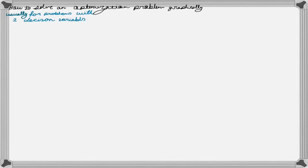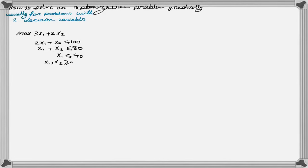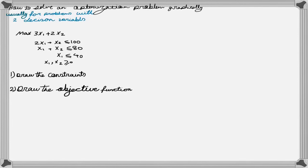Let's look at one example to see how the graphical method works. Suppose we have a maximization problem subject to a set of constraints. To solve this problem graphically, we need to implement two steps. The first step is to draw the constraints and the second step is to draw the objective function. When we draw the constraints of the problem, we form an area which is called the feasible area or feasible region. The ultimate goal for an optimization problem is to find the best value of the objective function within that feasible area.